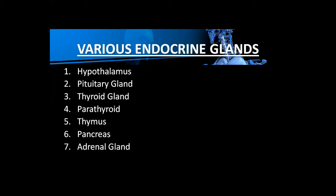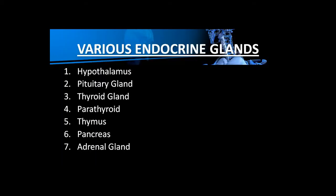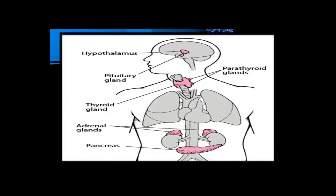Point number two is the pituitary gland. Its location is below the hypothalamus — it is a pouch-like structure hanging below the hypothalamus, and we call that part the pituitary gland. Point number three is the thyroid gland, which is attached to the windpipe.